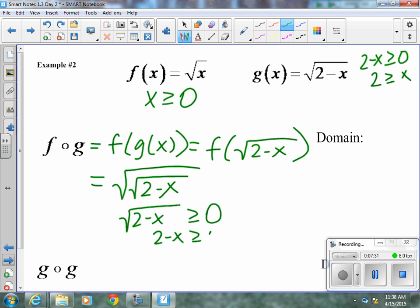Square both sides. And 2 has to be, add x to both sides, and 2 is greater than or equal to x. Or x is less than or equal to 2. Now, we have to compare that with our domain of our inner function, which is the exact same thing. So our domain here is going to be anything less than or equal to 2 or negative infinity to 2.